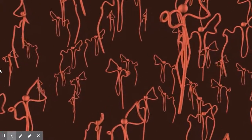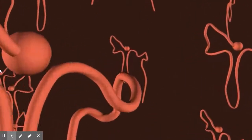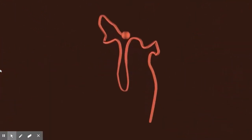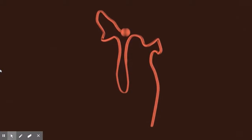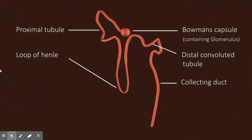There are approximately one million nephrons in each kidney. The Bowman's capsule is a cup-like structure which surrounds the glomerulus — a network of blood vessels. The blood vessels act like a sieve filtering the blood that passes into the kidney. The filtered blood, which we call filtrate, passes into the tubule, is then processed by the nephron, and will ultimately become urine.